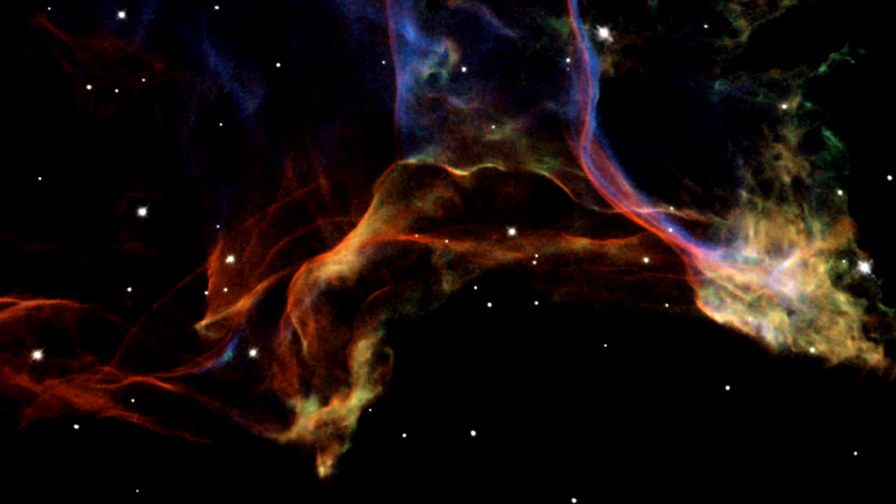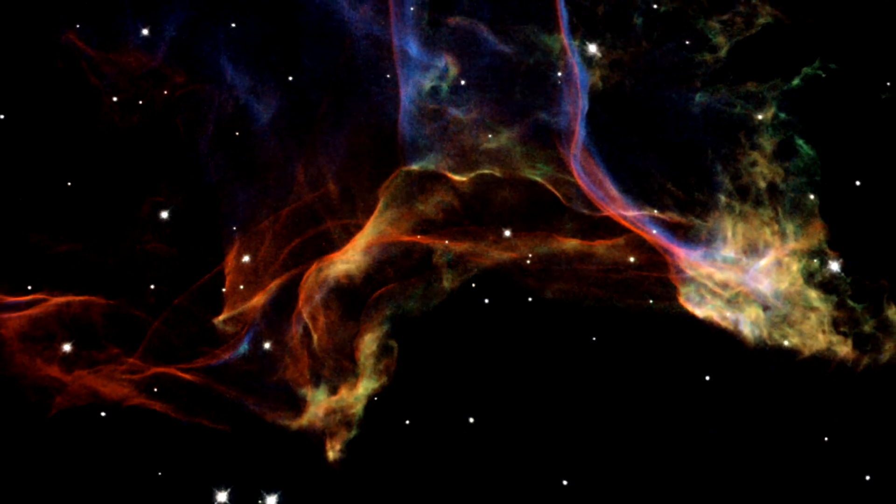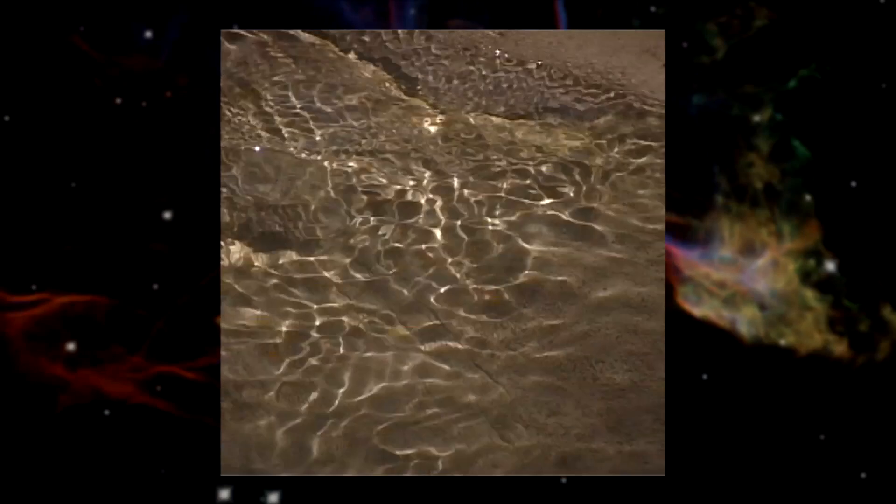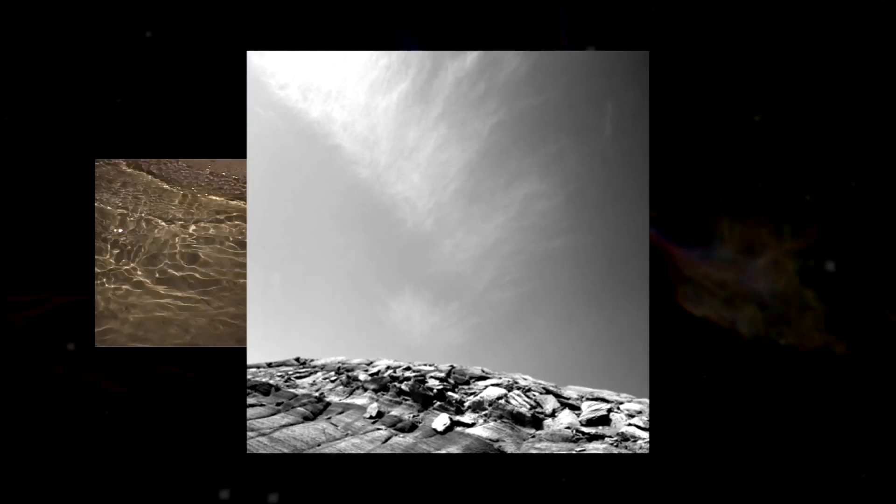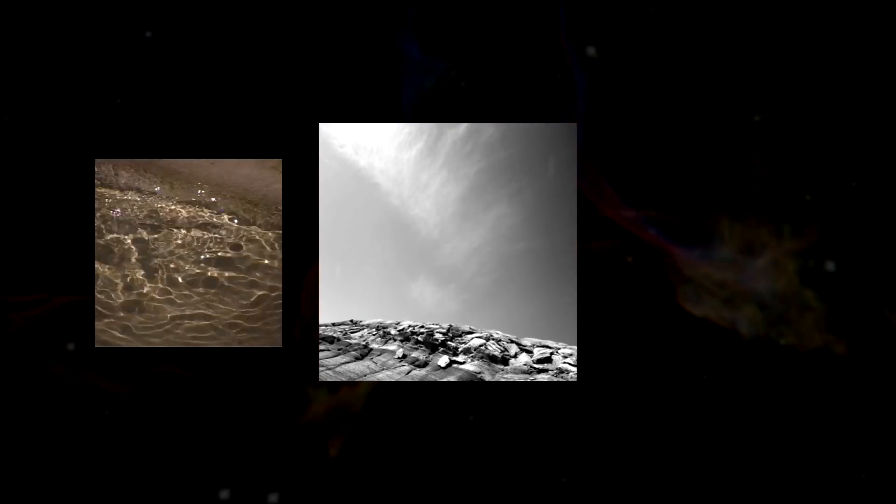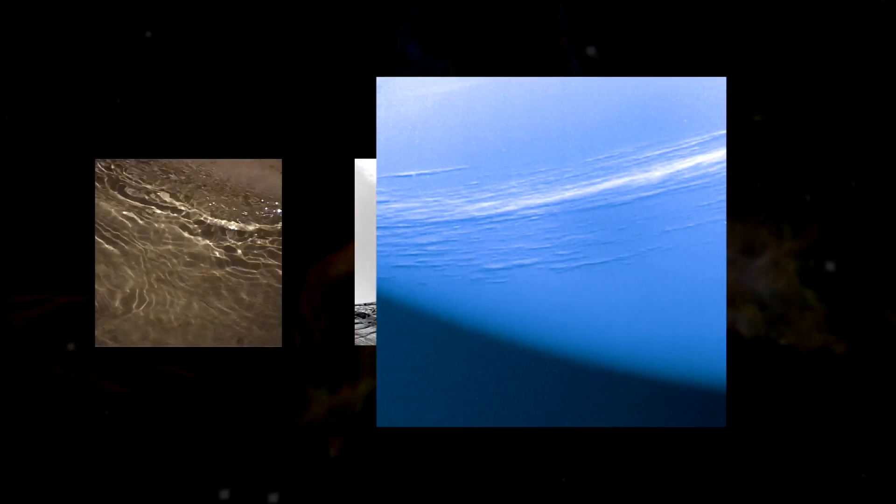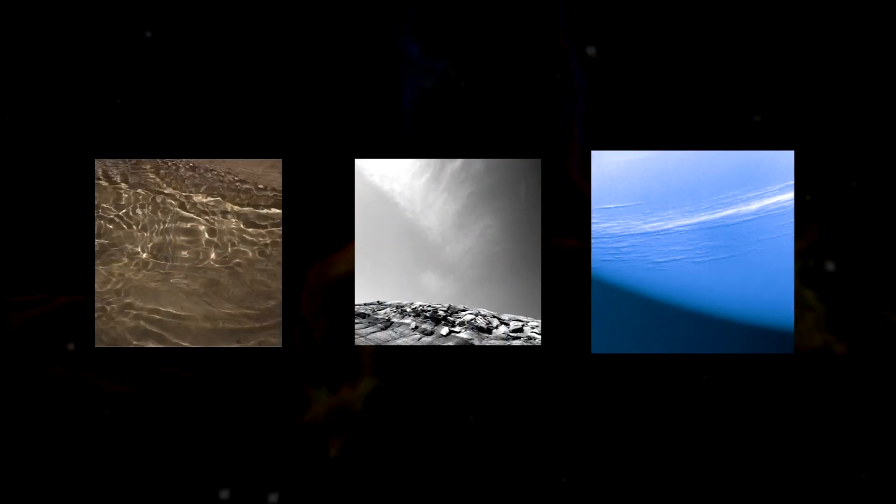The Hubble images of the Veil Nebula are striking examples of how processes that take place hundreds of light-years away can sometimes resemble effects we see around us in our daily lives. There are similarities with the patterns formed by the interplay of light and shadow on the bottom of a swimming pool, rising smoke, or wispy cirrus clouds.